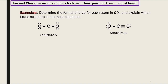In the previous video, I showed you two Lewis structures for carbon dioxide. In this video, we will discuss how to determine which Lewis structure is more plausible. We have two structures for carbon dioxide: Structure A and Structure B.